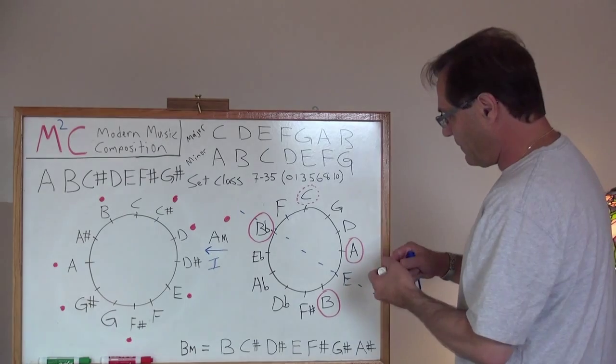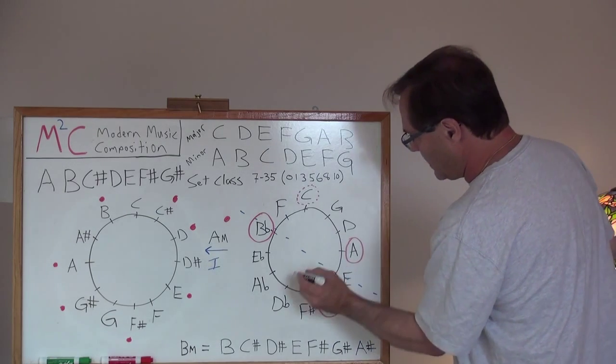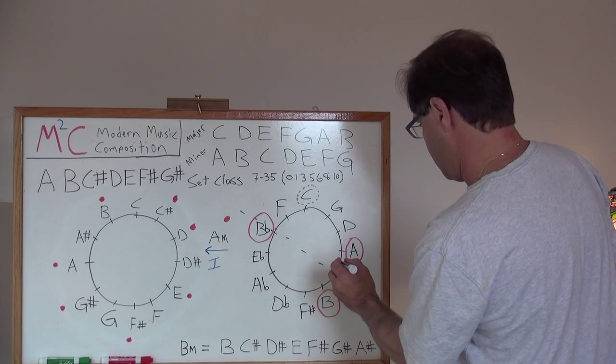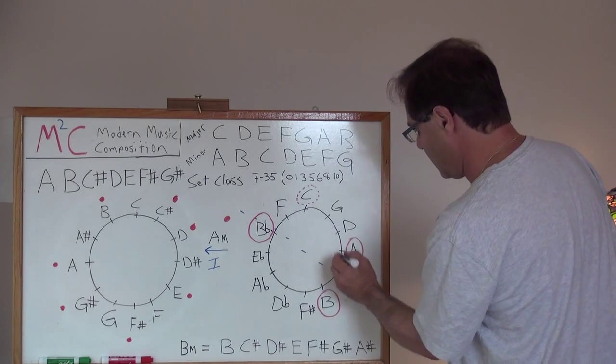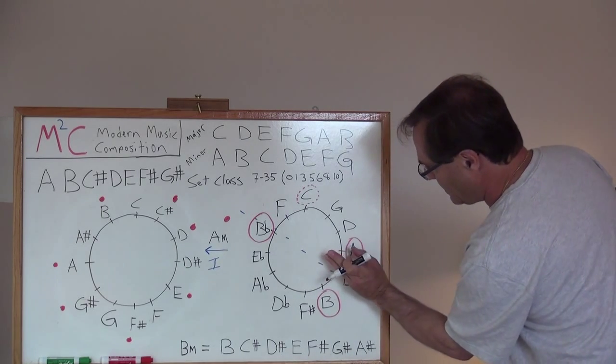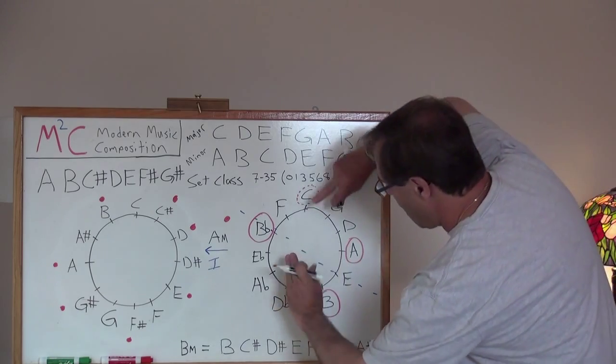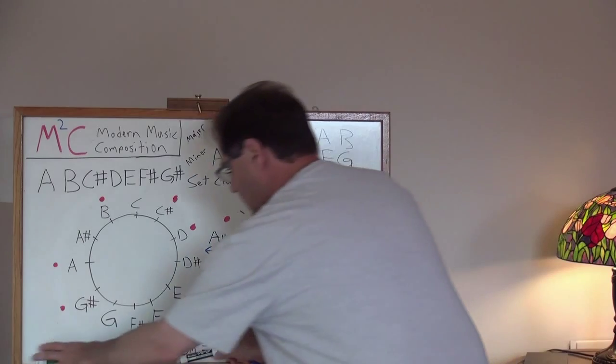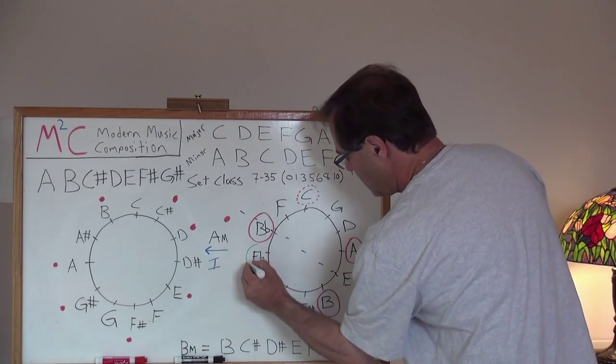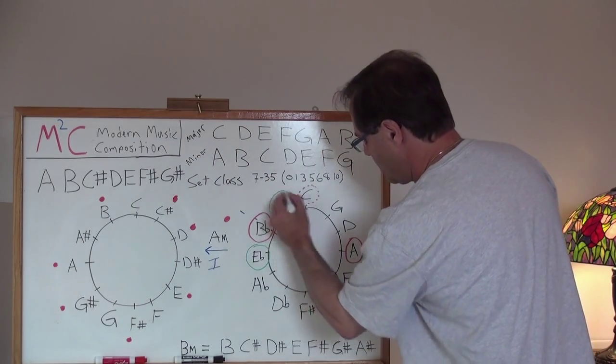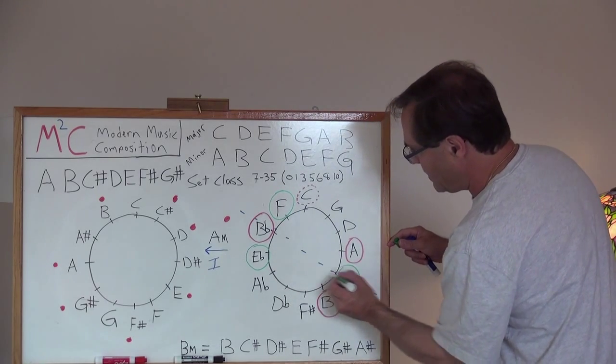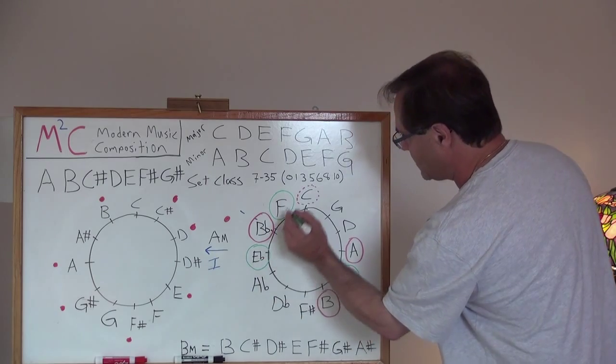The next thing you could do is flip it on this axis here, where you flip it over like that, where now you've got, and I'm going to draw it in a different color, E, F, and E flat. So, now you've got E major, E flat major, and F.